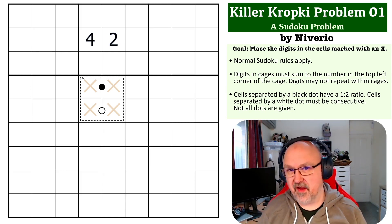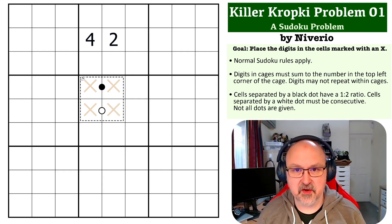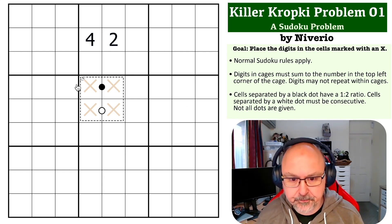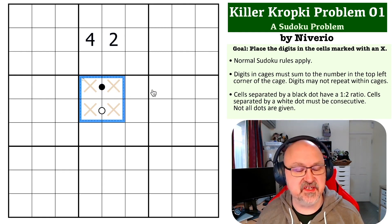Okay, so the way I like to think about this one, and this is the way I solved it, is actually to use parity. So a 15 cage is an odd number.